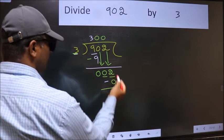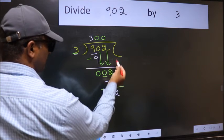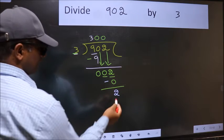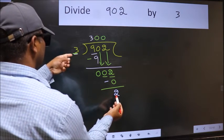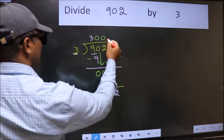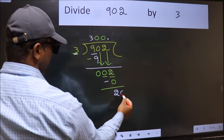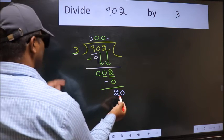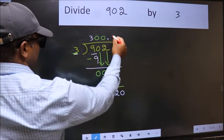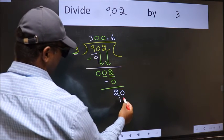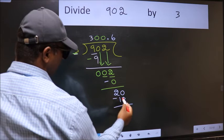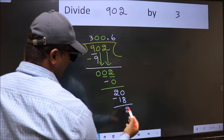Over here, we did not bring any number down, and 2 is smaller than 3. So now we can put dot and take 0. So 20. A number close to 20 in 3 table is 3 times 6, 18. Now we should subtract. We got 2 again.